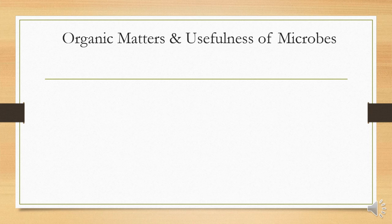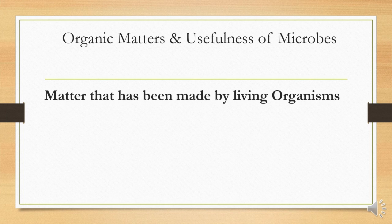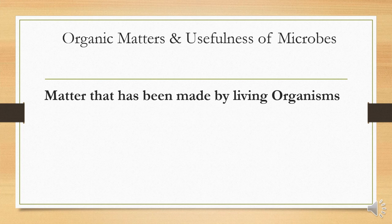First of all, organic matter and the usefulness of microbes. The matter that has been made by living organisms — like plants, animals, and other living organisms, including sea life — all these matters which are made from animals and plants are called organic matters. Organic matter can consist of nutrients which are useful for the further growth of plants and the ecosystem.